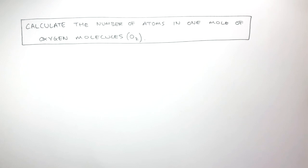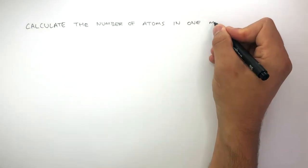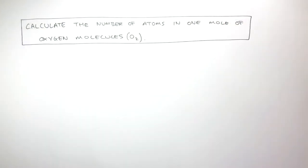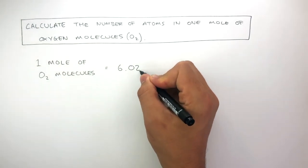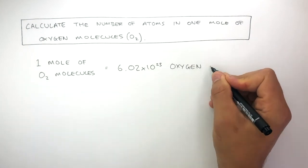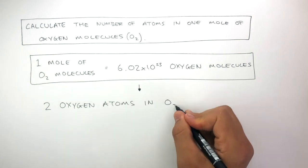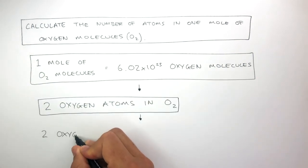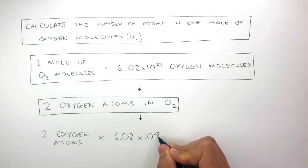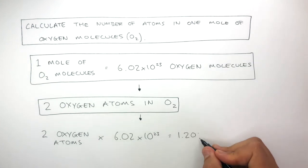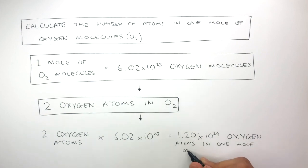The last exam style question: calculate the number of atoms in one mole of oxygen molecules, O₂. One mole of oxygen molecules equals 6.02 times 10 to the power of 23 oxygen molecules. Because there are two oxygen atoms in O₂, we do 2 times 6.02 times 10 to the power of 23, which equals 1.20 times 10 to the power of 24 oxygen atoms in one mole of oxygen molecules.